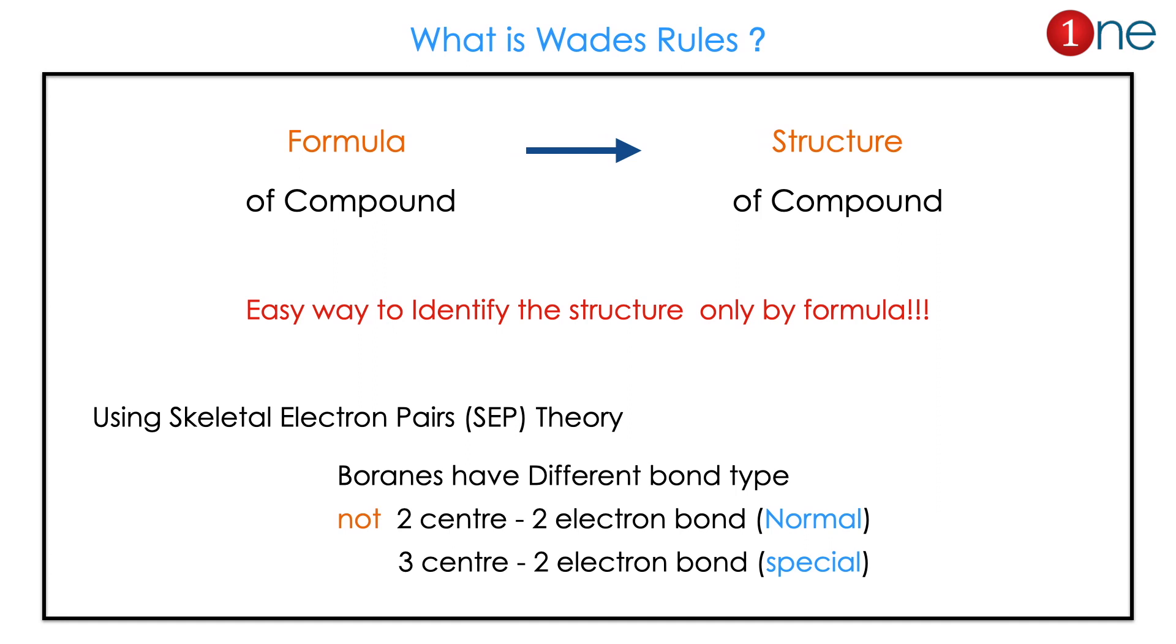Skeletal electron pair theory will be used. Normal bonds are two-center, two-electron bonds. Here, three-center, two-electron bonds are there, so it is special. That's why structure prediction is important here.